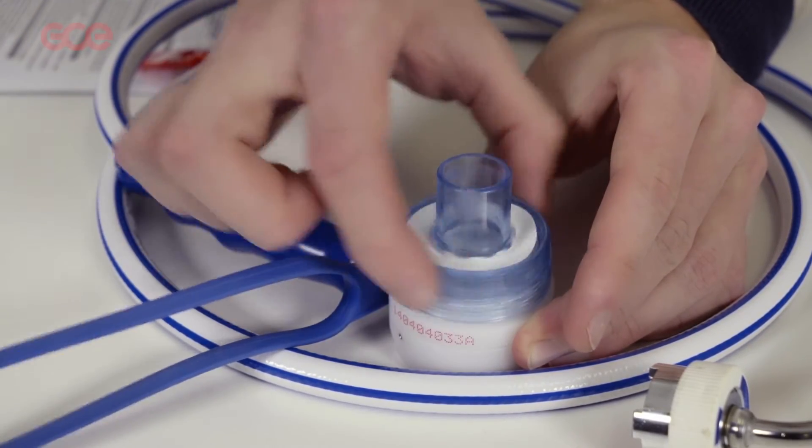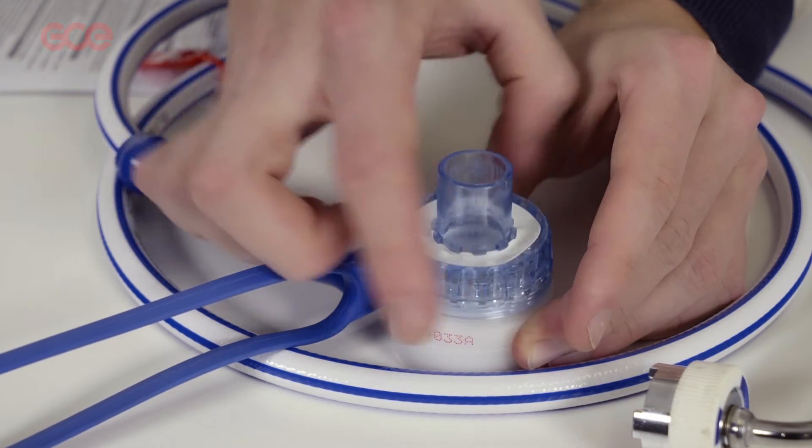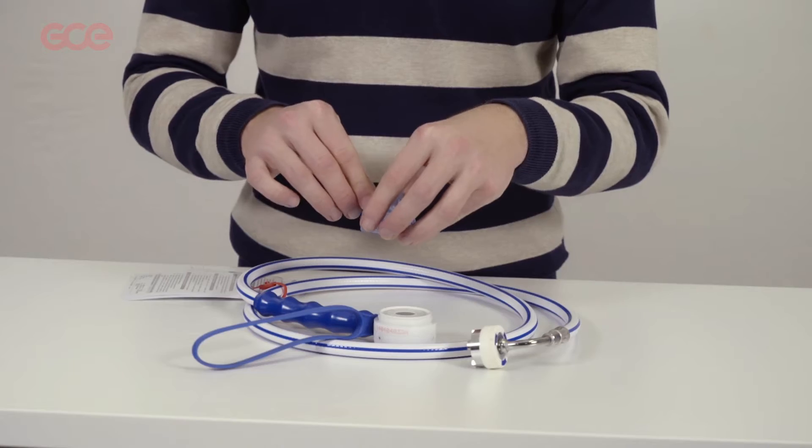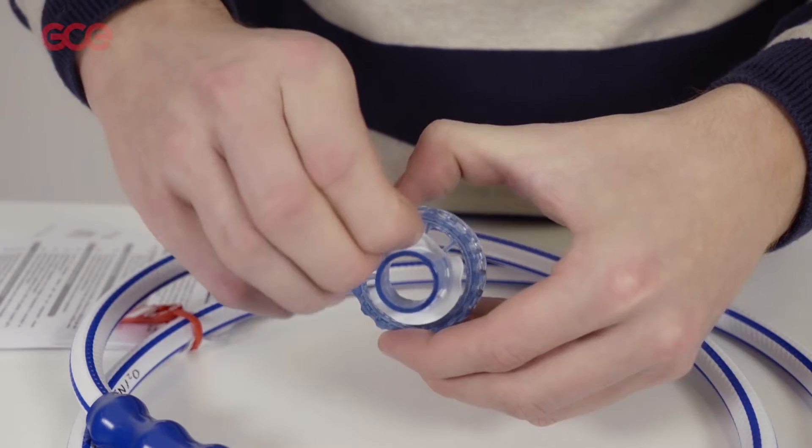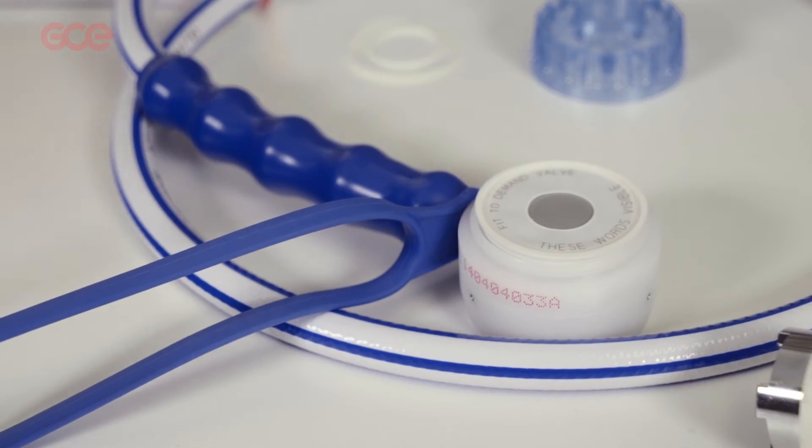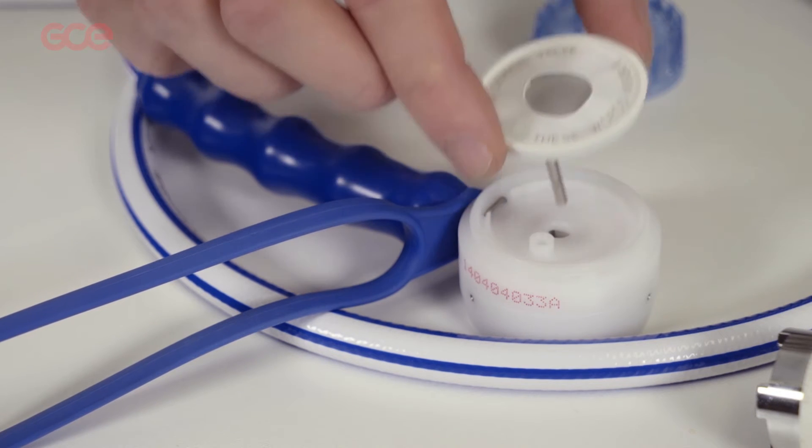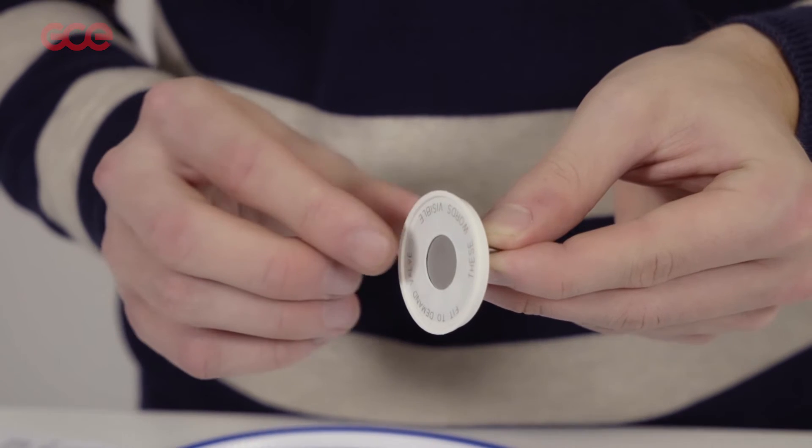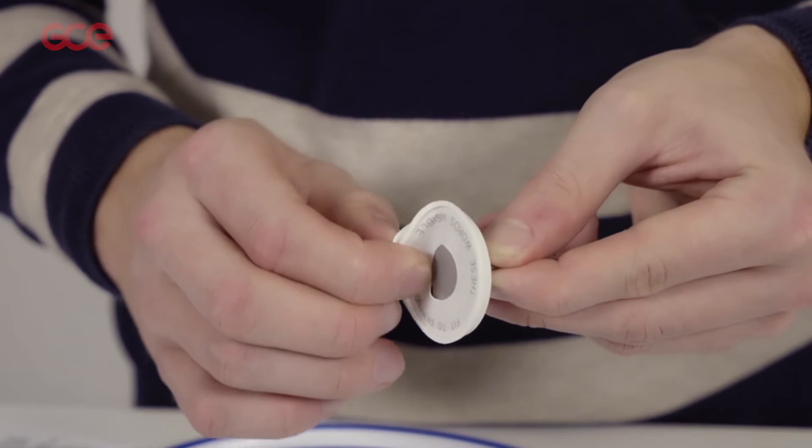Unscrew the blue part from the demand valve. Remove the silicon valve flaps from the patient port and inhale disc. During removal, please handle the pieces with care so as not to damage these parts.